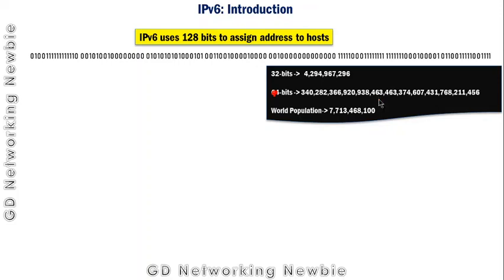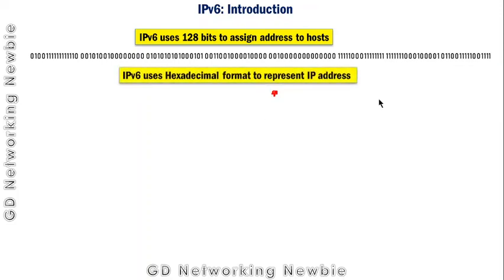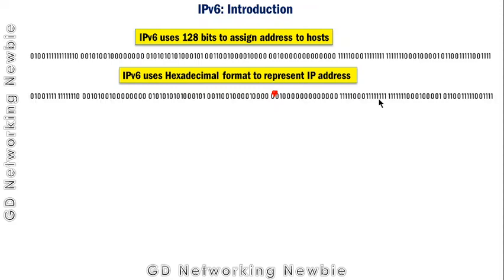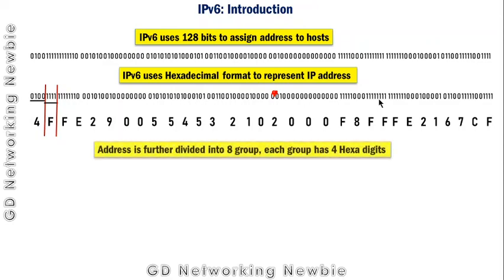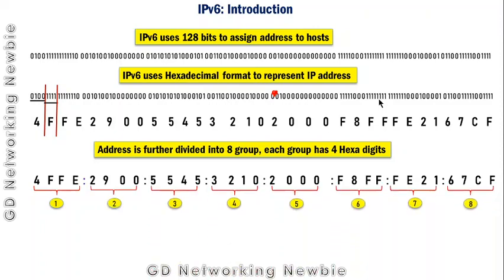IPv6 uses hexadecimal format to represent IP addresses, unlike IPv4 which uses decimal notation. To convert an IPv6 address, we take 4 bits at a time and convert them into hexadecimal. We continue converting the next 4 bits into hexadecimal until the complete 128-bit IPv6 address is represented. This address is further divided into 8 groups, with each group having 4 hexadecimal digits.